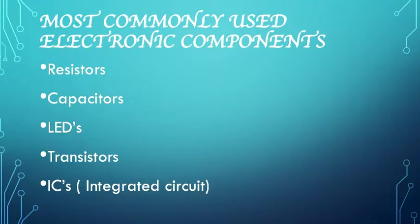Which are the most commonly used electronic components in today's time? From the name, you might have guessed that resistors, capacitors, LEDs, transistors and integrated circuits are used in today's times. These electronic components are those without which none of the electrical circuitry is complete.